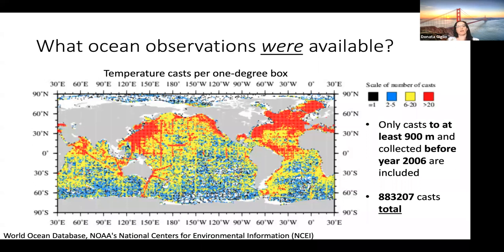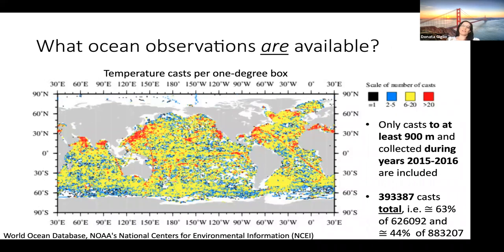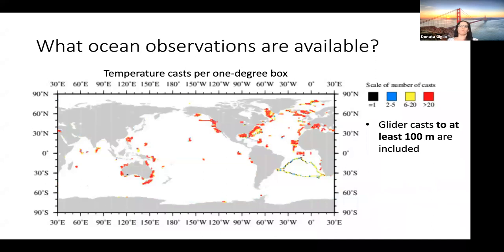Even including the initial years of Argo, the Southern Ocean is still not well covered. But if you compare with how many observations we can collect now — specifically for years 2015 and 2016 — in only two years we can now do a much better job at observing the ocean on a global scale, especially in the Southern Hemisphere. Finally, I want to show the casts from glider data; I mentioned earlier how gliders are very important for observing gradients in boundary current systems, and these are the gliders in the World Ocean Database showing where these data are available.